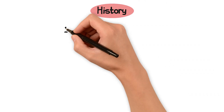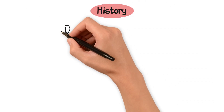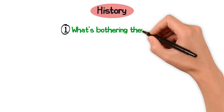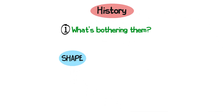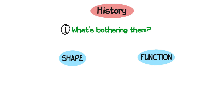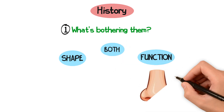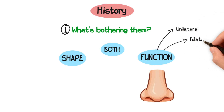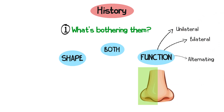The history. The first question to ask the patient is what bothers them about their nose. Is it the shape? Is it the function? Is it a combination of both? Specifically regarding function, ask the patient whether the blockage is unilateral, bilateral, or alternating in nature.